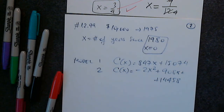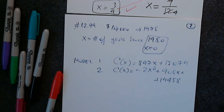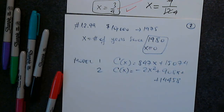Let's look at these two models. What type of function is the first one? Linear. What type is the second one? Quadratic. The degree of the first is 1 — linear. The degree of the second is 2 — quadratic. The line graph shows the cost of inflation, so we're talking about a line, not the quadratic model two.